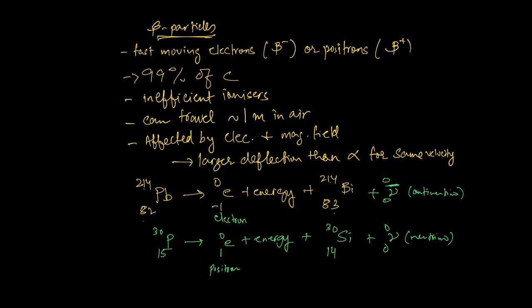Since the nucleus contains protons and neutrons, where does the beta particle actually come from? The beta particle comes from the nucleus, but not from electrons outside it. Just prior to beta emission, a neutron inside the nucleus turns itself into a proton, emitting an electron (beta particle) and an anti-neutrino, along with some energy. This changes the ratio of protons and neutrons in the nucleus, making the daughter nucleus more stable.